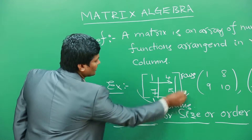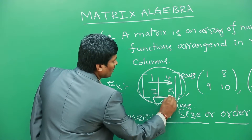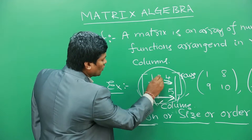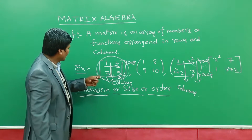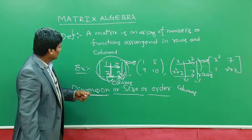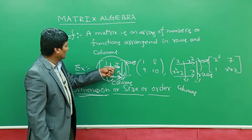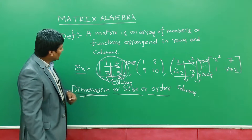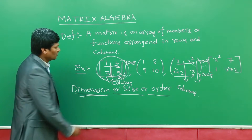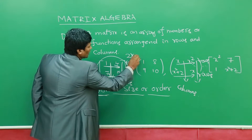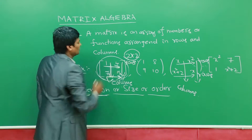Suppose if you take this matrix, it has two rows and two columns. The first row is 1, 4 and the second row is 7, 5. The first column is 1, 7 and the second column is 4, 5. So we say the dimension of this matrix is 2 cross 2, and we read this as 2 by 2.